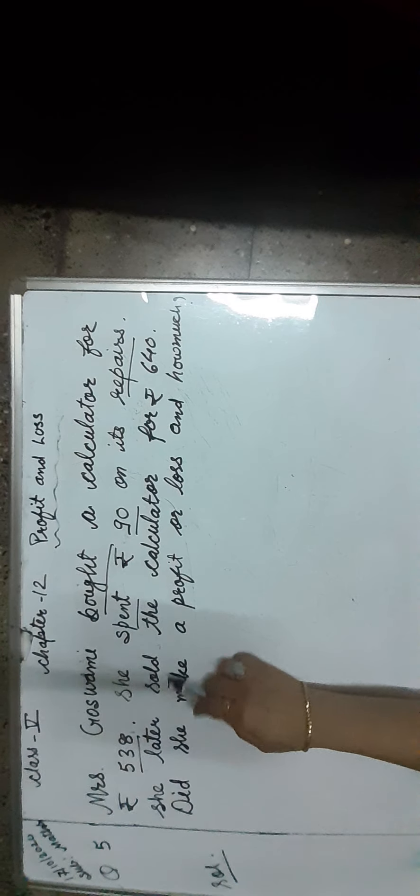Question number 5 is: Mrs. Goswami bought a calculator for Rs. 538. She spent Rs. 90 on its repairs. She later sold the calculator for Rs. 640. Did she make a profit or loss, and how much?